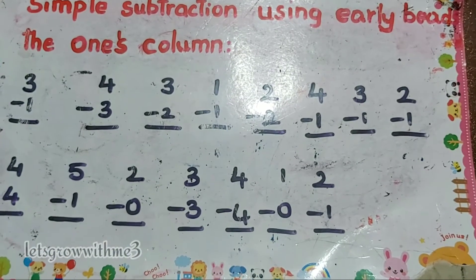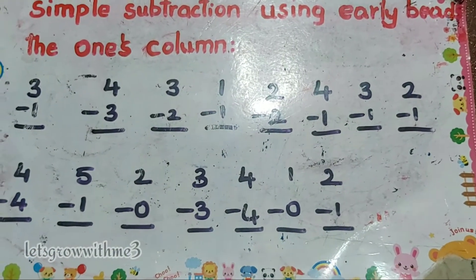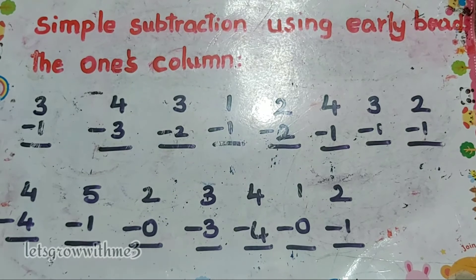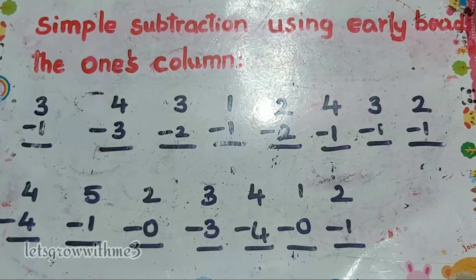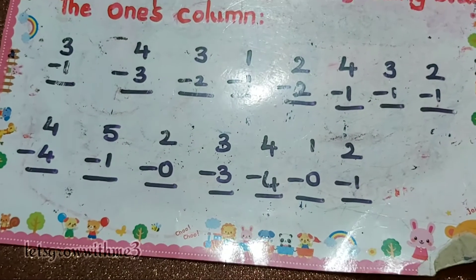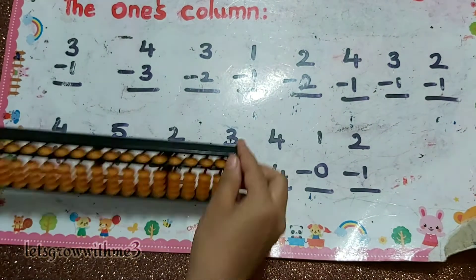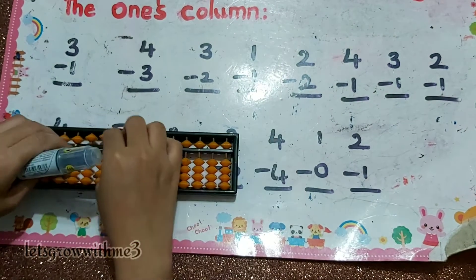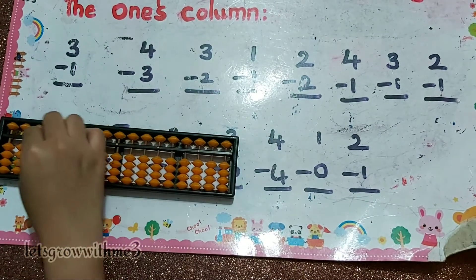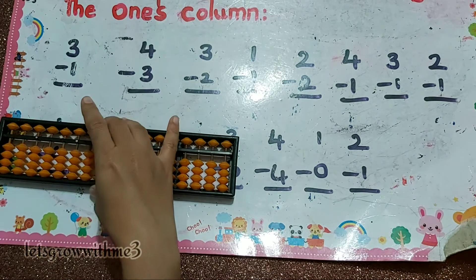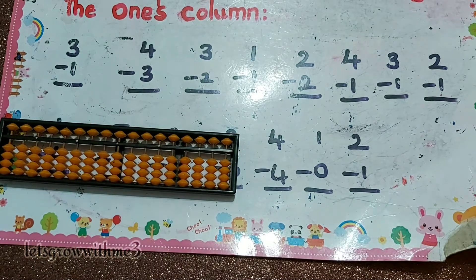Now we will see simple subtraction using early beads in the ones column — how we should do subtraction. Usually for addition we slide up the beads, and for subtraction we slide down the beads.